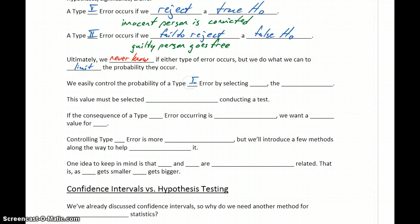Controlling a Type I error is pretty simple. It's done by simply selecting our value for alpha, the significance level for our test.